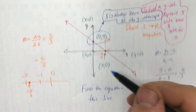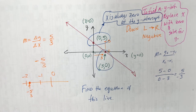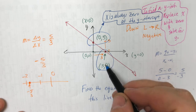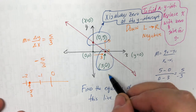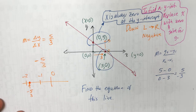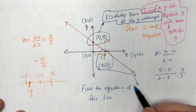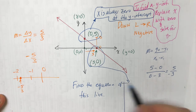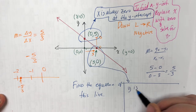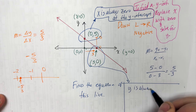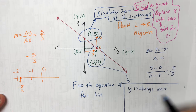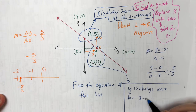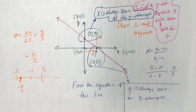That's the x-intercept. For the x-intercept, it's the opposite — y is always zero for x-intercepts, always and forever. To find an x-intercept, put 0 for y and solve.